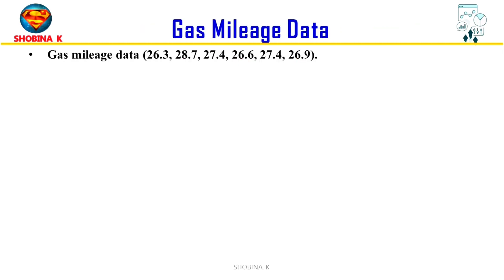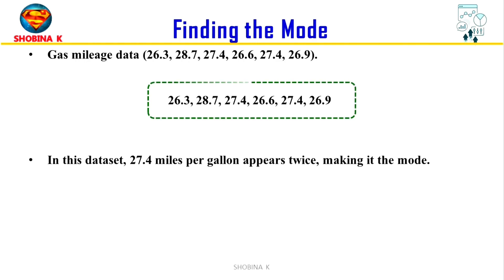Now let's see how it works. The gas mileage data is given here. The owner of a new car conducts six gas mileage tests and records the results in miles per gallon, which includes 26.3, 28.7, 27.4, 26.6, 27.4, and 26.9.